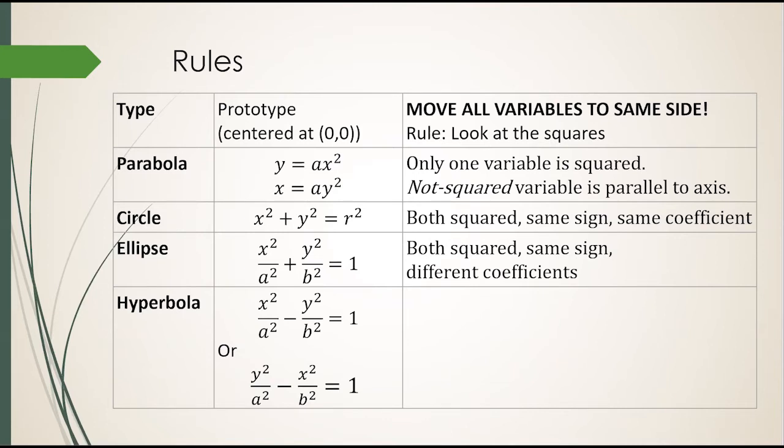If both variables are squared and they have the same sign but different coefficients, it's an ellipse.